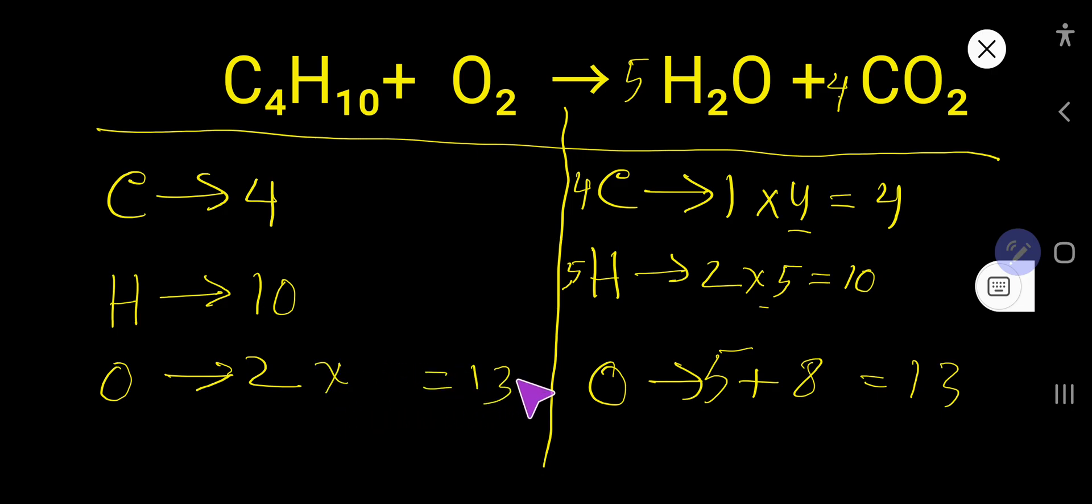That is why you have to take this 13 as a numerator and you have to take this 2, that is the given number, as a denominator. That is you need to multiply by this fraction. So this fraction must come before this atom, that is 13 over 2 O2. So you have to place here 13 over 2.